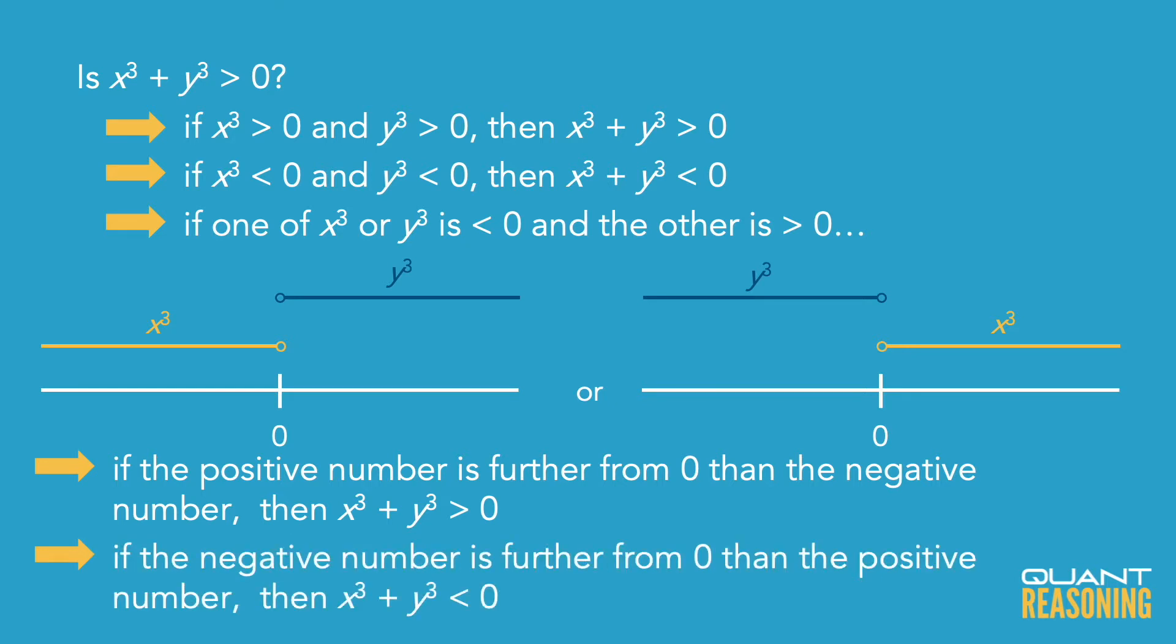So it's safe to say that if the positive one is farther from zero than the negative one, that would lead to a yes. If the negative one is farther away from zero than the positive one, that would lead to a no.